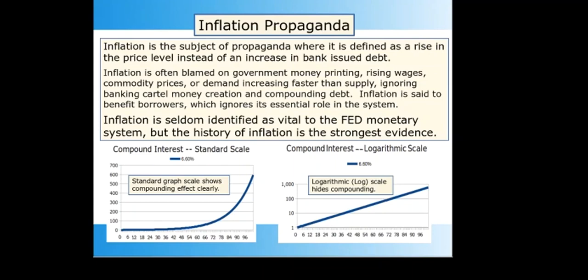Many graphs of economic data, including stock price charts, use a logarithmic scale instead of a standard scale. The logarithmic scale increases by powers of 10, which hides exponential monetary inflation by making it appear as an ordinary linear increase. On the standard scale, the vertical axis increments go up by 100 each time: 100, 200, 300, 400. But on the logarithmic scale, the increments are powers of 10: 1, then 10, then 100, then 1,000. This makes exponential growth appear to be just a straight line rather than the dramatic curve visible on the standard scale.